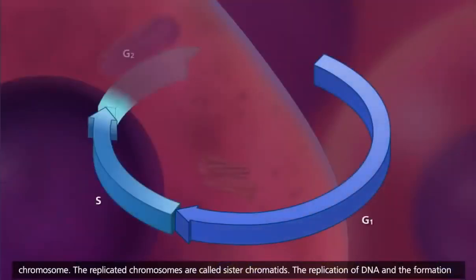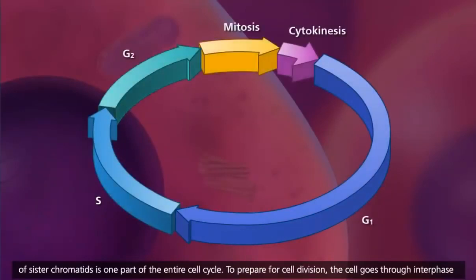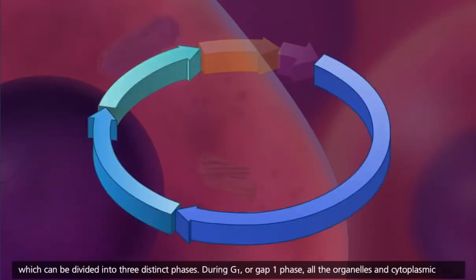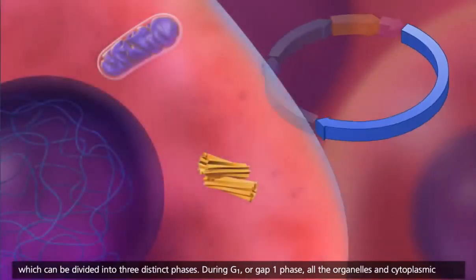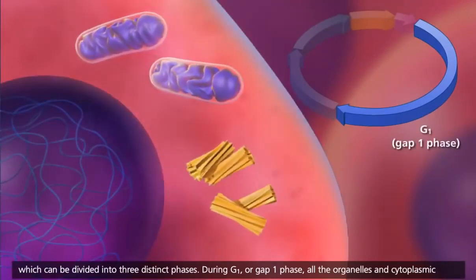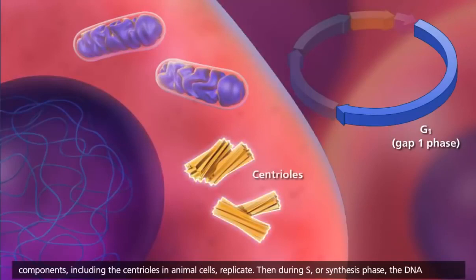The replication of DNA and the formation of sister chromatids is one part of the entire cell cycle. To prepare for cell division, the cell goes through interphase, which can be divided into three distinct phases. During G1, or GAP1 phase, all the organelles and cytoplasmic components, including the centrioles in animal cells, replicate.